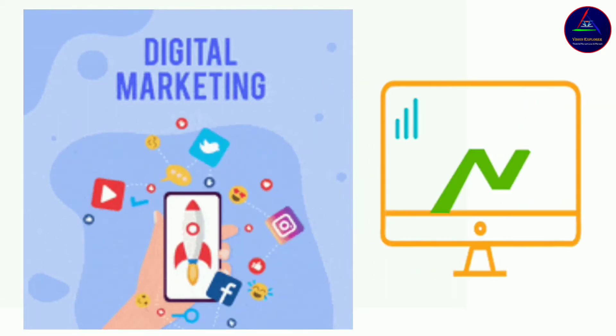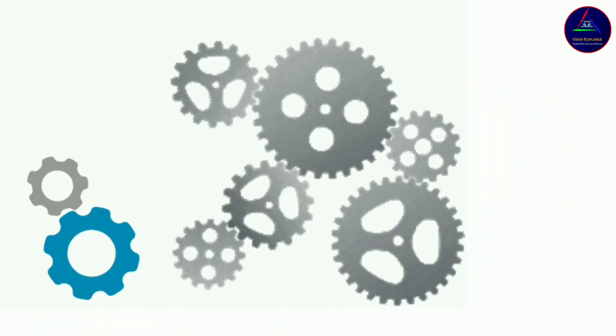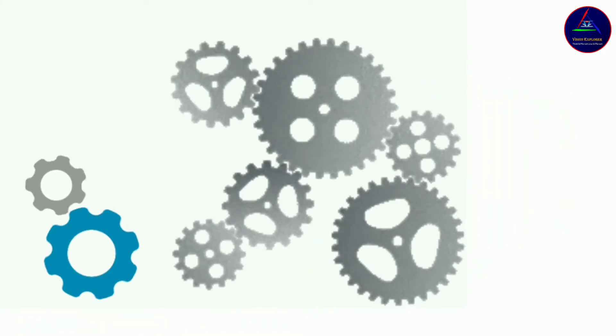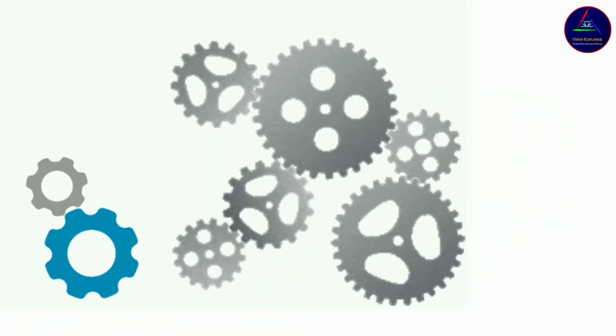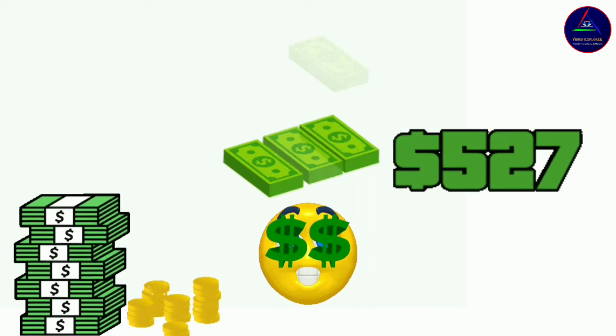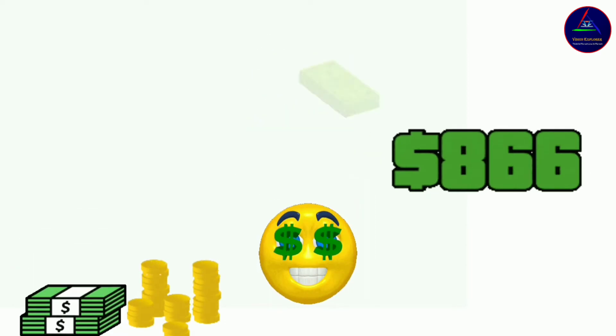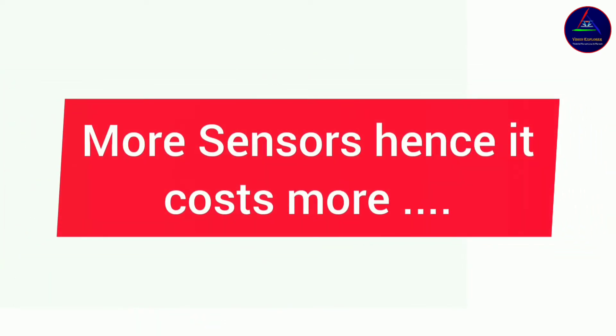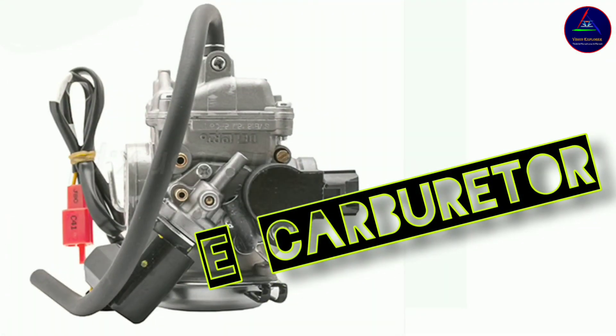The next reason is more technical, though it is also related to cost. Since the FI system has more sensors than the e-carburetor, it is more accurate — and therefore more expensive. This again affects the price point of the motorbike. Therefore, companies have found a middle pathway called the e-carburetor.